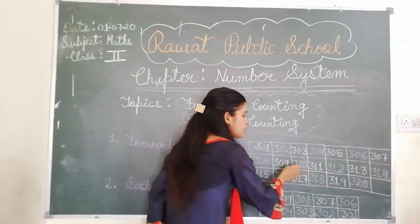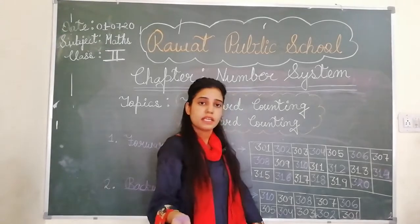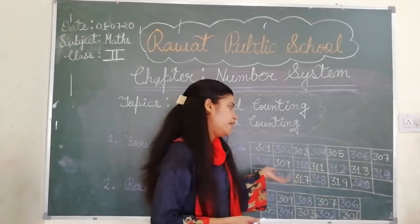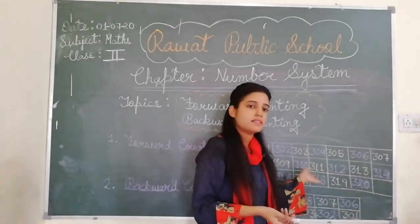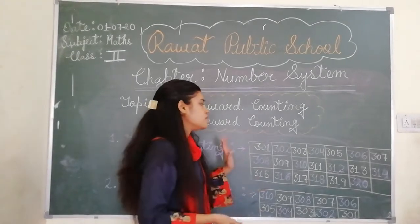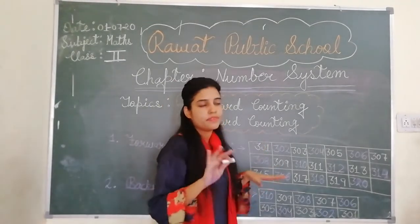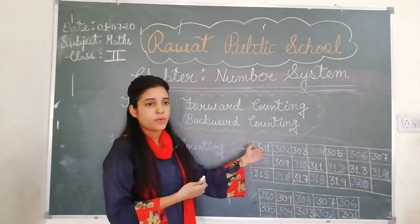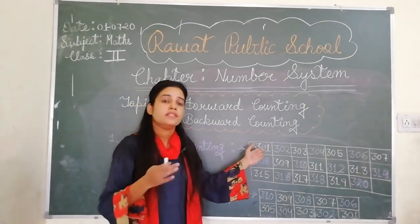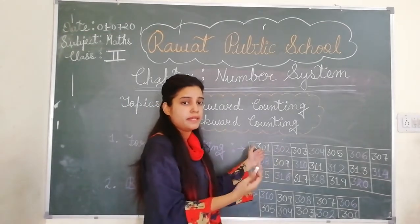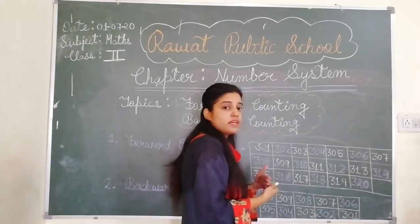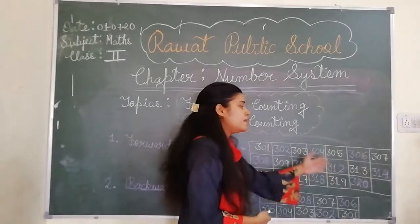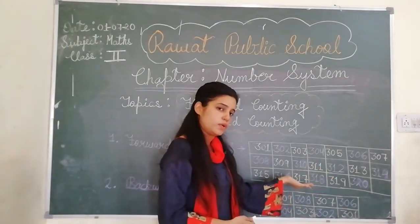310 कैसे लिखोगे — 3 लिखोगे, उसके बाद 10। तो forward counting में क्या होगा — जैसे अगर आपको exam में question आ जाता है, only आपको 301 दिया हुआ है और आगे के numbers लिखने हैं, तो सबके आगे-आगे वाला next number write down करना है। और बहुत easily आप लोग इसको लिख पाओगे।